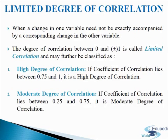Next, we come to limited degree of correlation. It refers to a situation when a change in one variable need not be exactly accompanied by a corresponding change in the other variable. It is a situation between perfect correlation (1) and absence of correlation (0), i.e., between 0 and positive 1, or between 0 and negative 1. The degree of correlation between 0 and ±1 is called limited correlation. The first sub-type is high degree of correlation: if the coefficient of correlation lies between 0.75 and 1, it is a high degree of correlation.